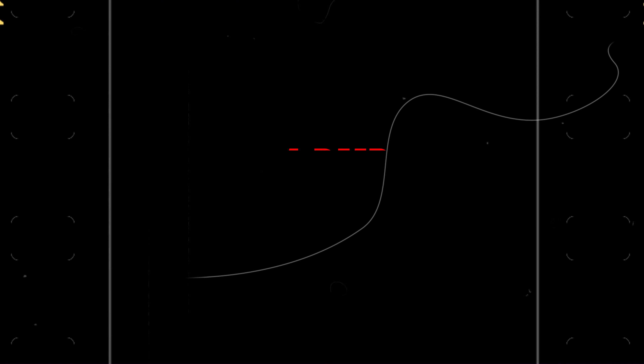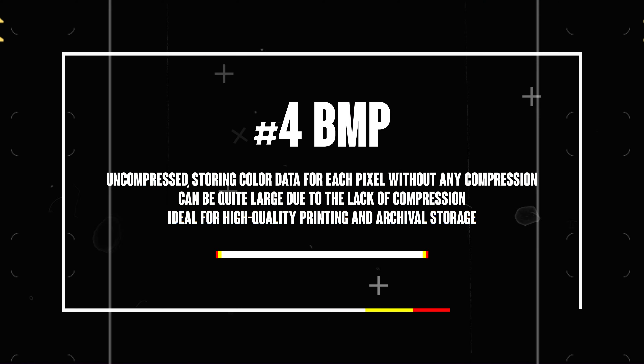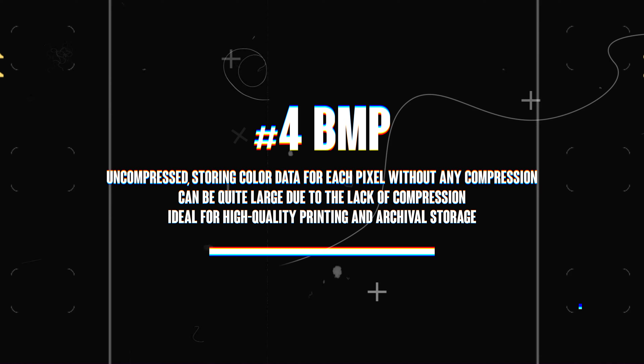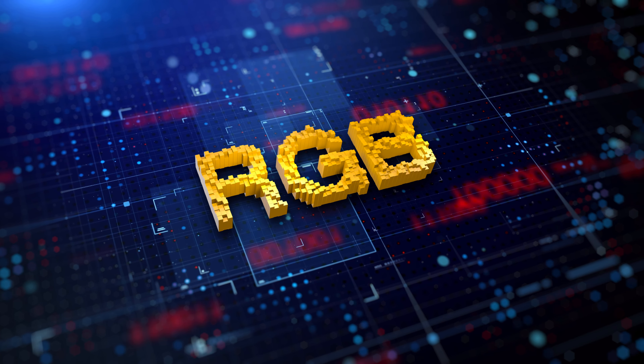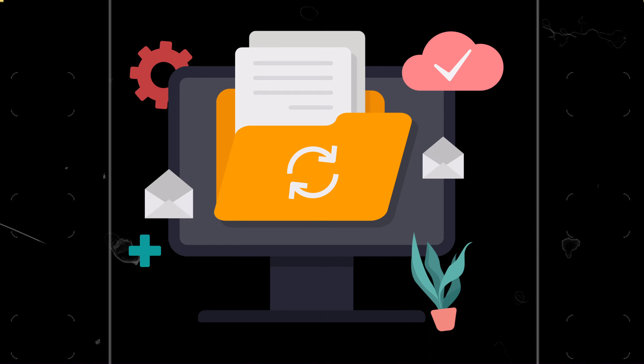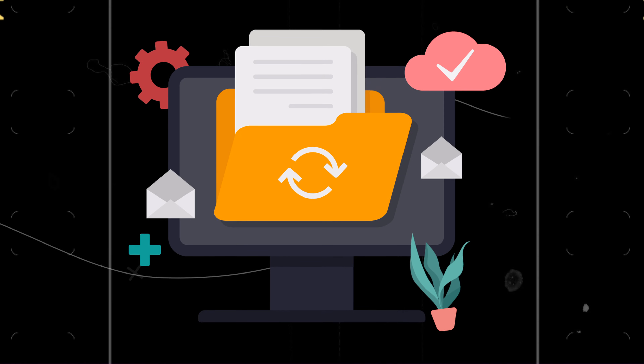Moving on to BMP, or Bitmap. BMP files are uncompressed, which means that they can be quite large. They store color data for each pixel without any compression. BMPs are used when image quality is crucial and file size is not a concern, like in high quality printing and archival storage.